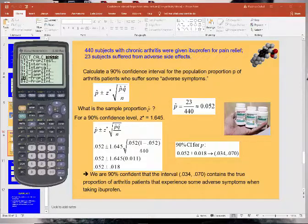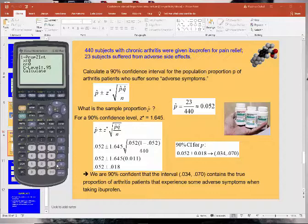And that's supposed to be for interval. And then what you're going to do is you're going to hit enter, so under one proportion z interval. What it's going to ask you here is x. So that's the number of people who are responding to having adverse side effects, so that's 23.